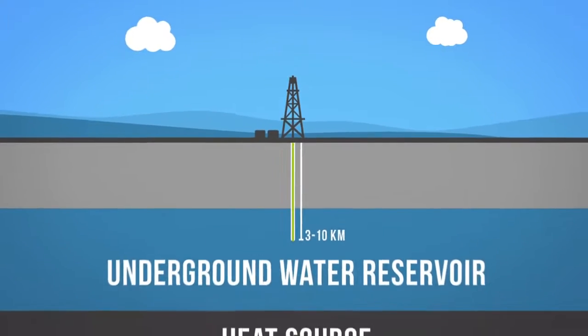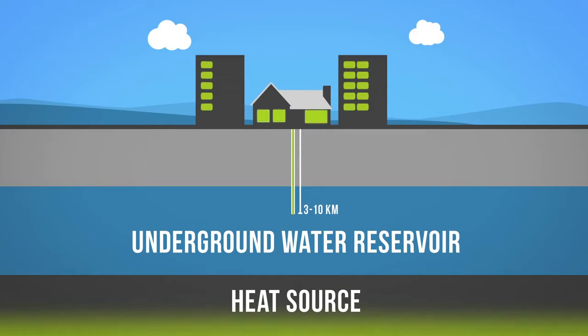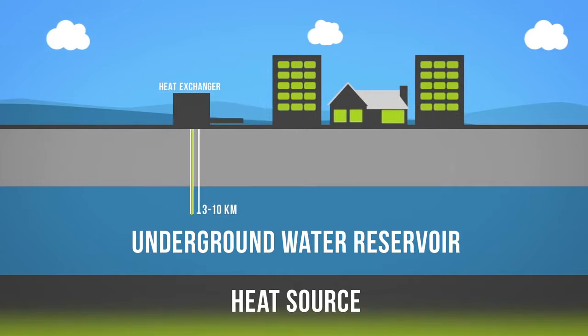Hot water from the Earth may be directly extracted to heat homes and buildings. This is done either by directly circulating the hot water through buildings, or by pumping it through a heat exchanger that transfers the heat to the building.